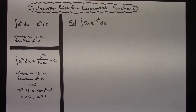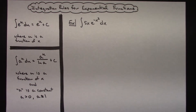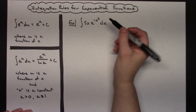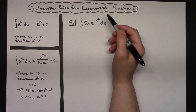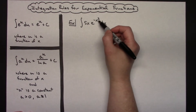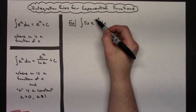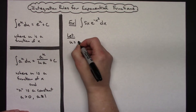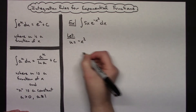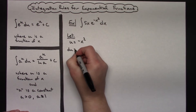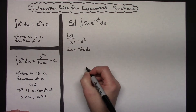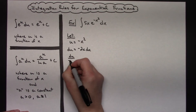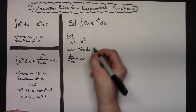For this first example, I want to integrate 5x times e raised to the negative x squared dx. My recommendation — it might not always work — but let your u be whatever is in that exponent. So we're going to let u equal negative x squared. Then du is going to be negative 2x dx, and solving for dx, we would have du over negative 2x equaling dx.